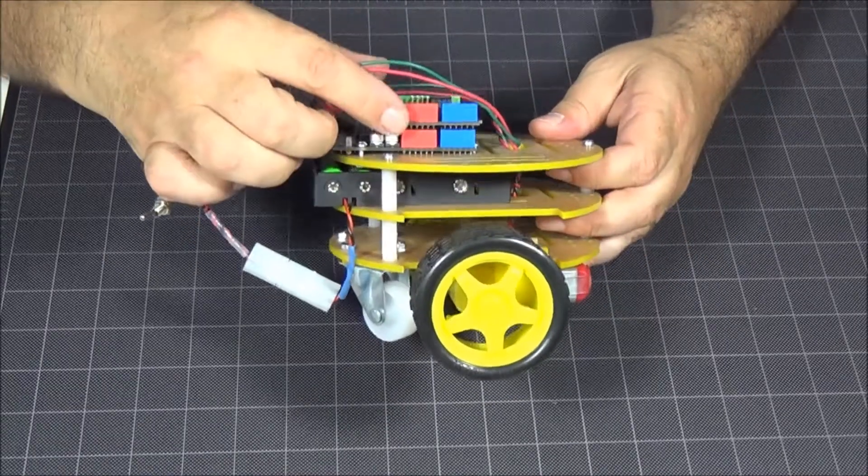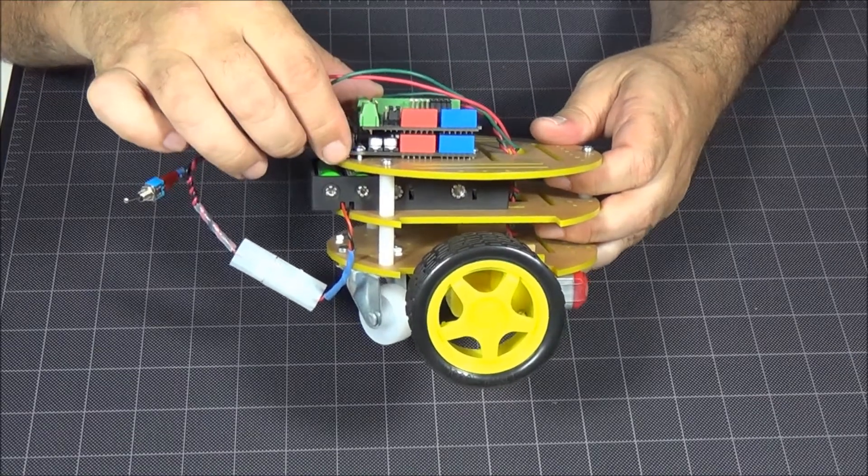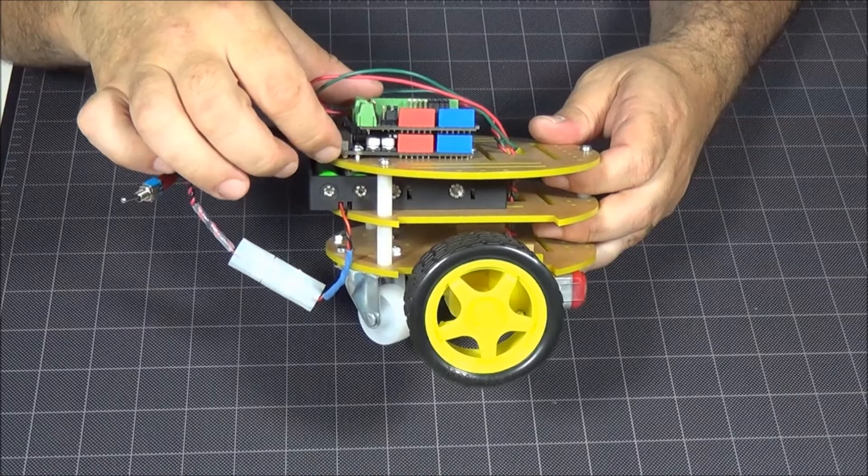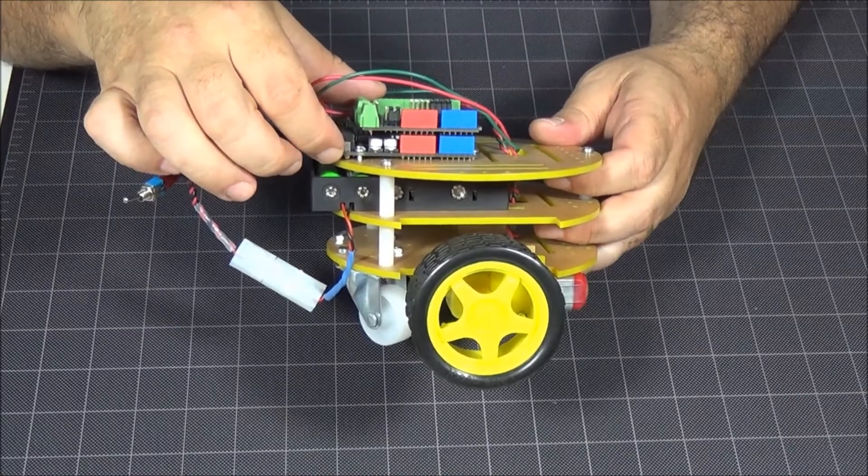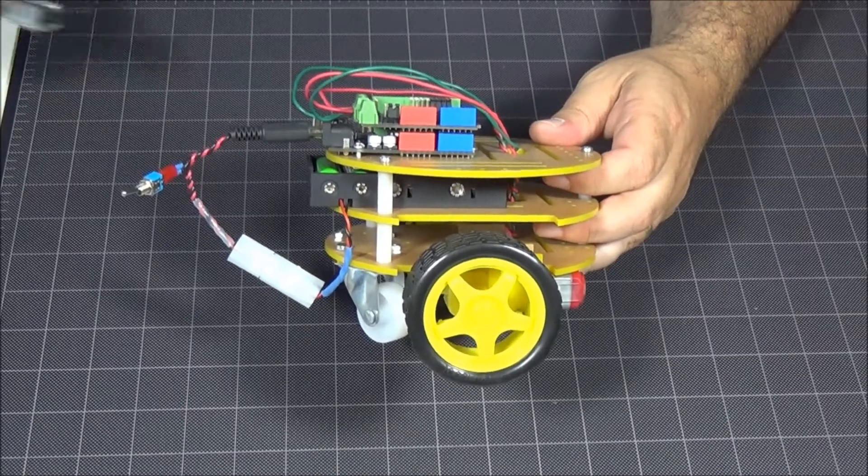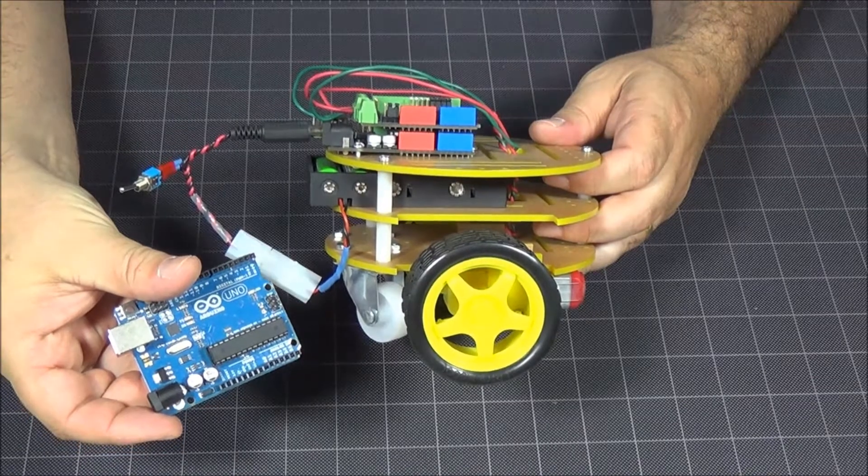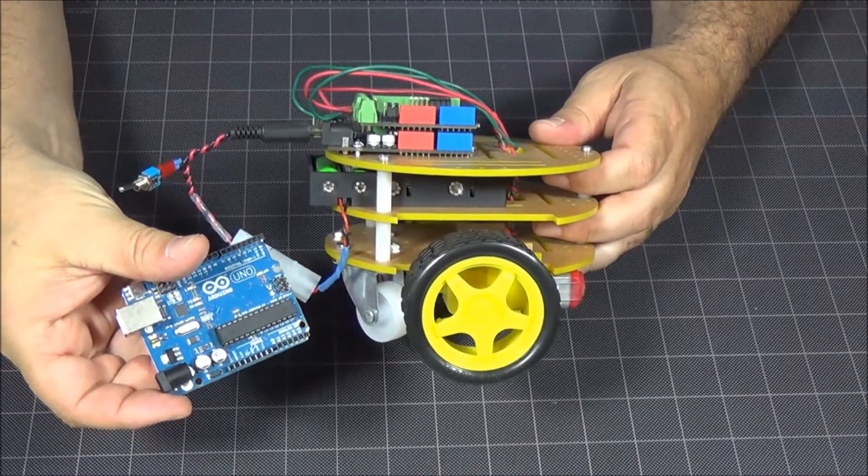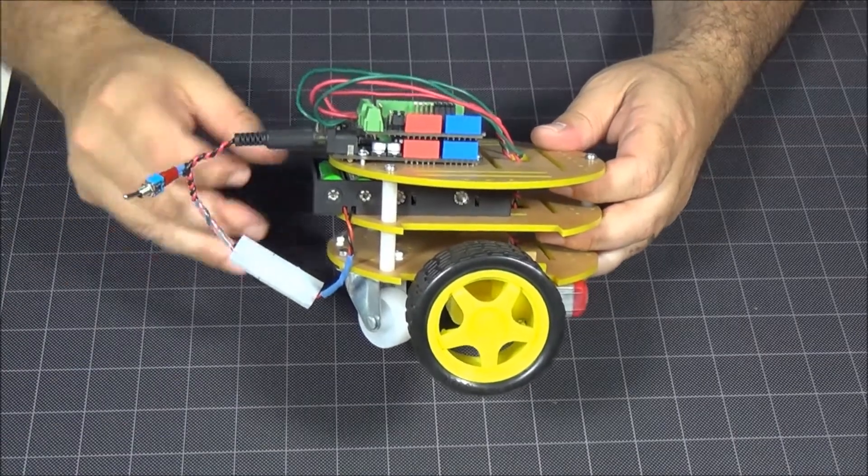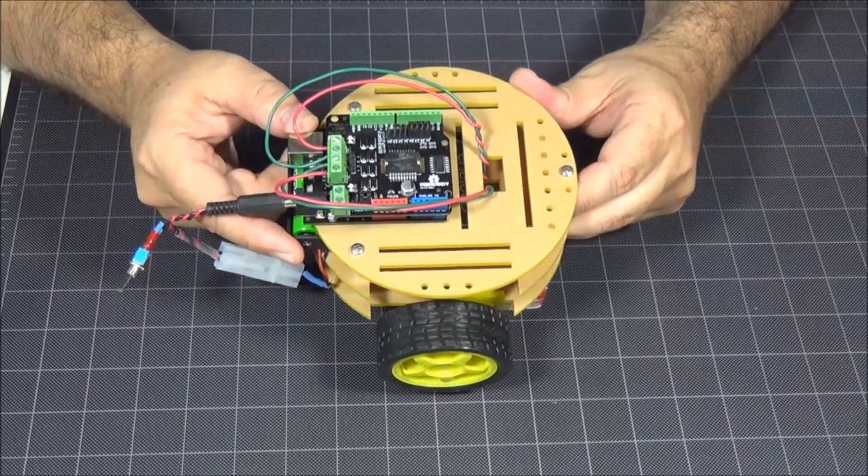As you can see here, I have this motor driver shield attached on top of a DFRobot DF Arduino microcontroller, but it works with other Arduino family controllers. Now, it is a 5-volt board, so that is the one requirement from the Arduino family.